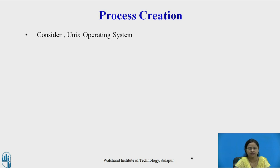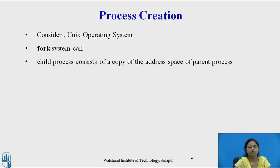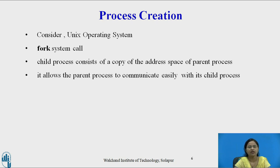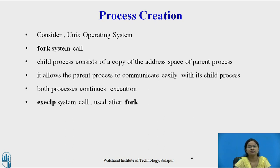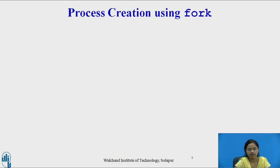To understand this concept, let us consider the Unix operating system. Unix uses the fork system call. Using fork, a child process is created, and this child process consists of a copy of the address space of the parent process, which allows the parent to communicate easily with its child. Both processes continue execution. The execLP system call can be used by the child process after fork, and execLP executes only in the child's address space.